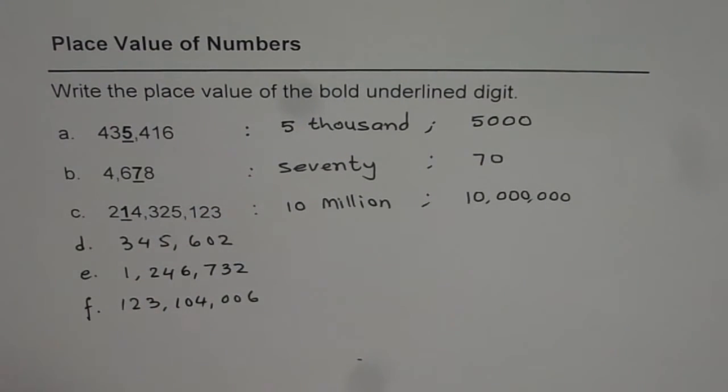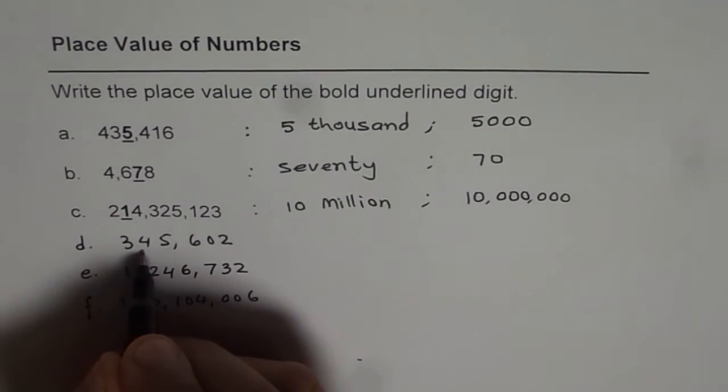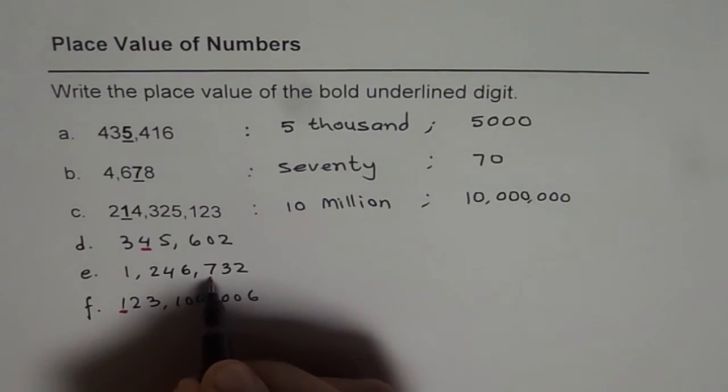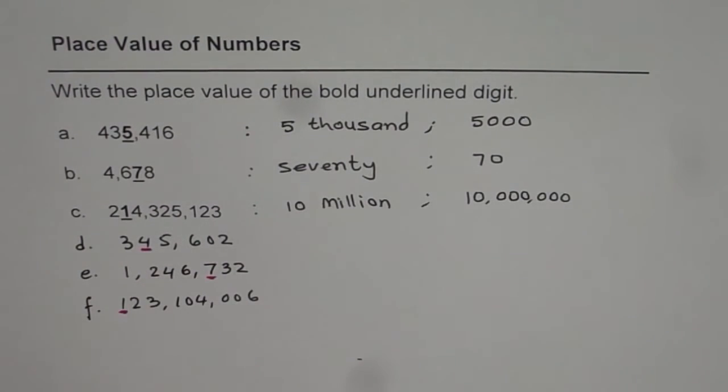Now you need to find place value of these numbers. So 4 here, okay? 1 here, and then in this case, let me underline 7. So write down the place value of these underlined numbers.